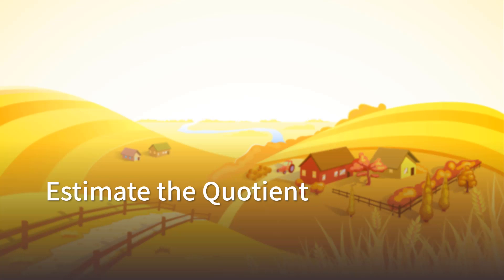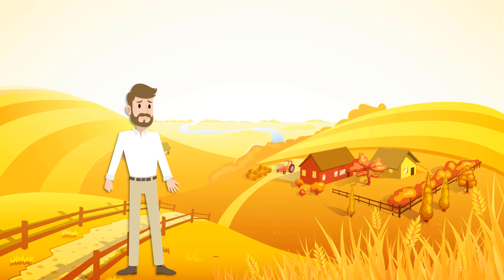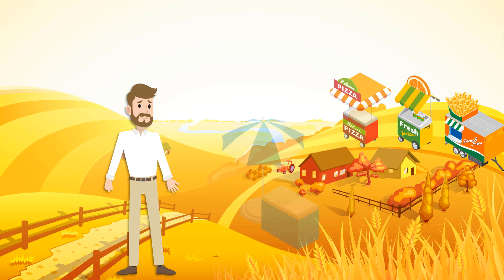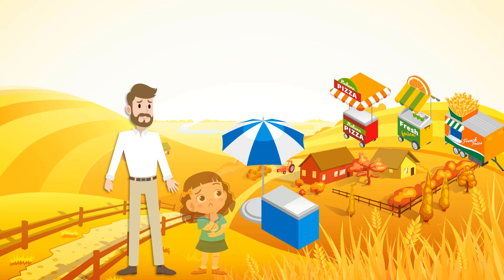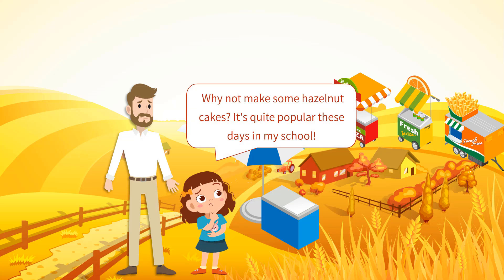Estimate the Quotient. After several years of selling pumpkin pies at the fair, Uncle Josh decided to try something new. He invited Abigail to make a new plan for him. 'Why not make some hazelnut cakes? It's quite popular these days in my school,' Abigail advised.